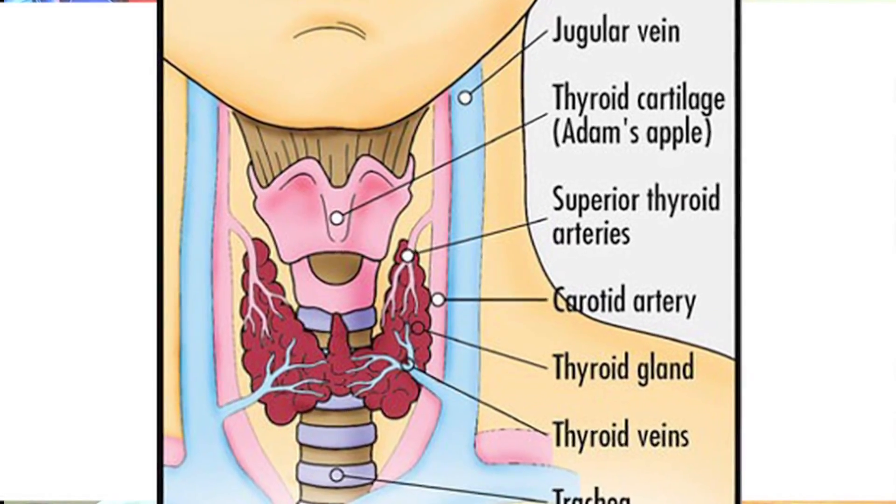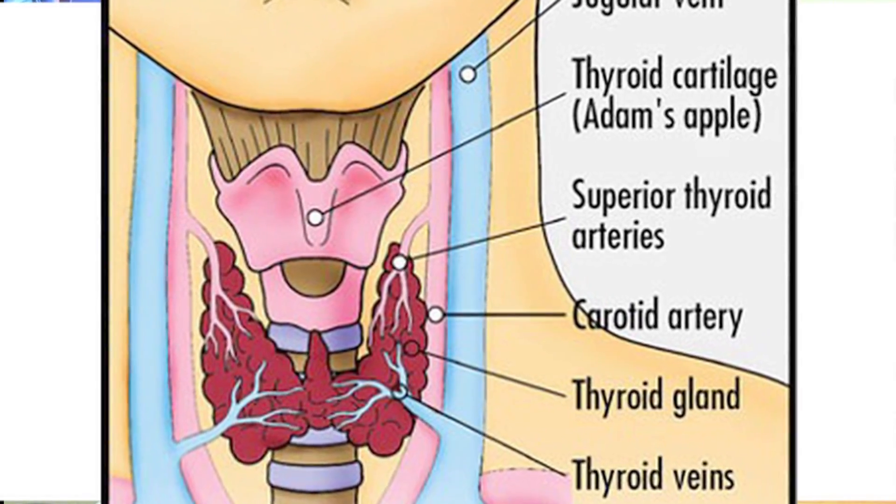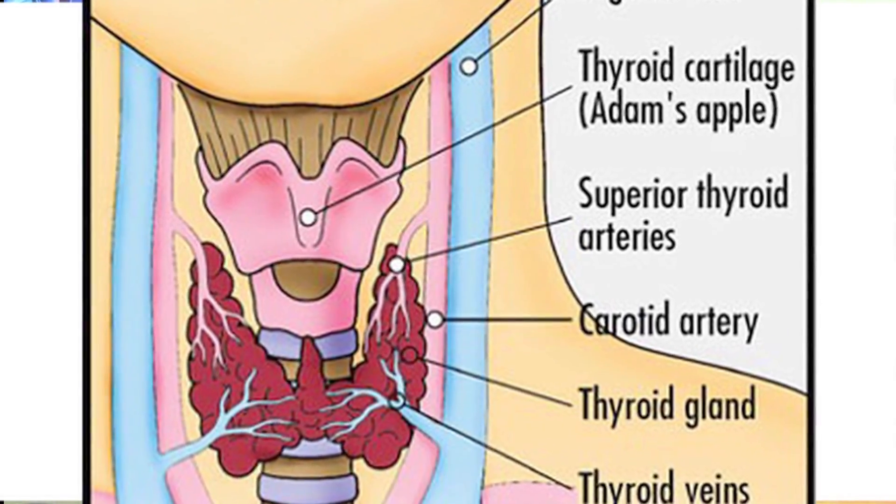When we think of skin symptoms with thyroid disease, we're really talking about, generally, underactive thyroid. In other words, your thyroid is not producing enough thyroid hormone, and so the skin tends to get very dry and flaky. And consequently, as it gets dry, it's much more prone to getting various kinds of rashes.